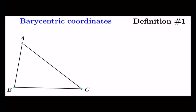Given a triangle ABC, we define the barycentric coordinates of a point K as the unique real numbers x, y, z, for which the following two conditions hold.